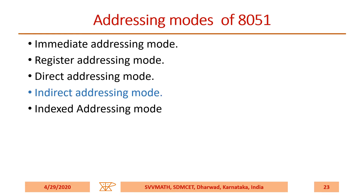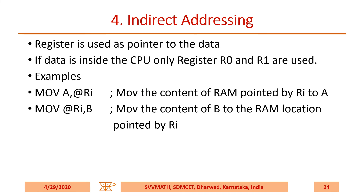In indirect addressing mode, a register is used as a pointer to the data. If data is inside the CPU, registers R0 and R1 are used — you cannot use R2, R3, or R4. You can write MOV A, @Ri where Ri is R0 or R1, which moves the content of RAM pointed by Ri to the A register. Similarly, MOV @Ri, B moves the content of B to the RAM location pointed by Ri.